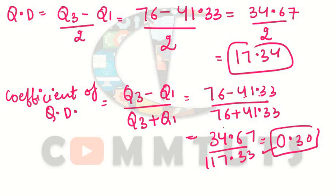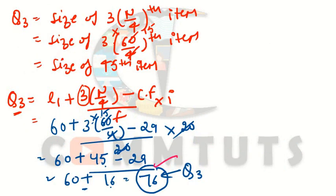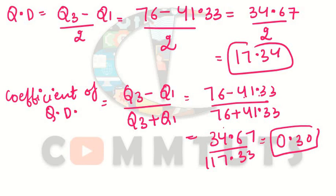This is how we calculate quartile deviation and coefficient of quartile deviation for a continuous series or frequency distribution series. To summarize the steps: first, note the given data; second, convert frequency to cumulative frequency; third, calculate Q1; fourth, calculate Q3; then apply the quartile deviation and coefficient of quartile deviation formulas.